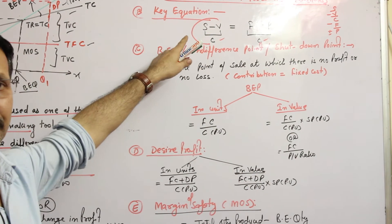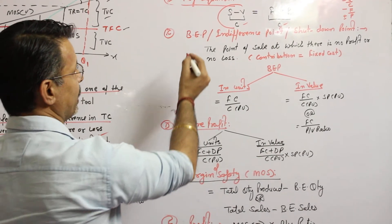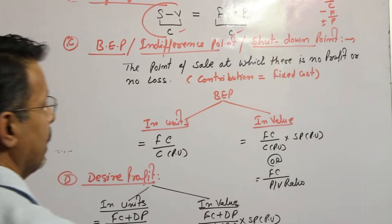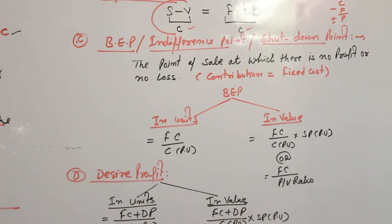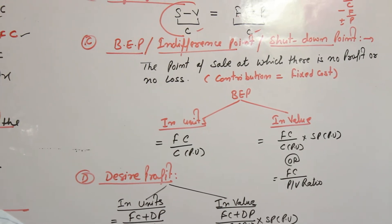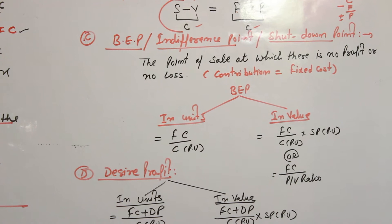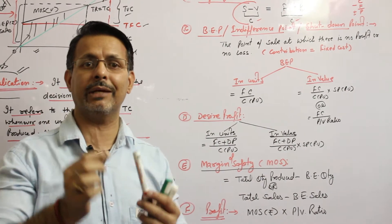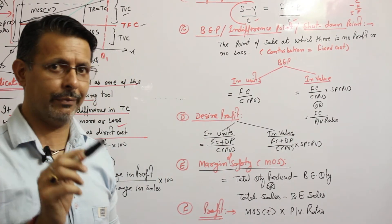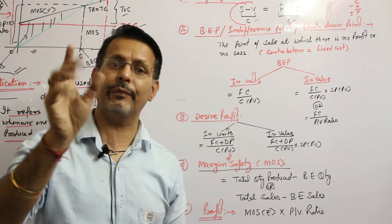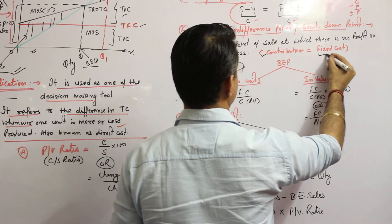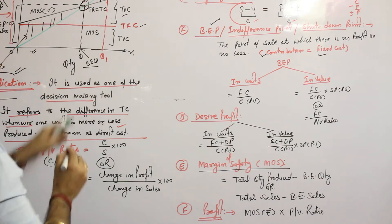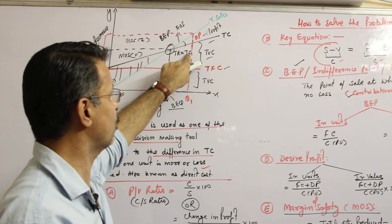So this is the key equation. The second point is break-even point, also known as the indifference point or shutdown point — it is the point of sale at which there is no profit and no loss. In economics, it is that point where the firm covers all types of costs — variable cost as well as fixed cost. At this level, contribution is equivalent to fixed cost, and total revenue equals total cost.